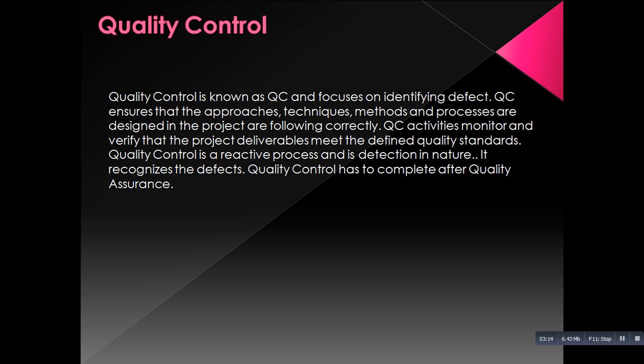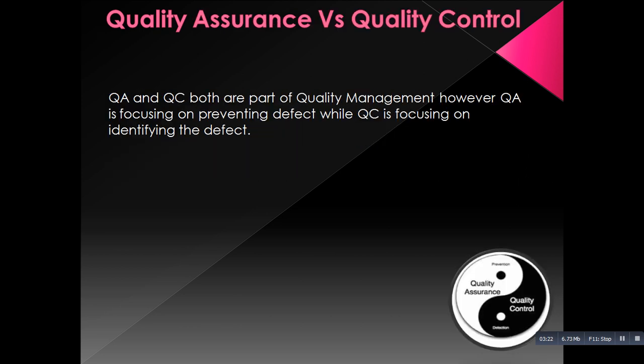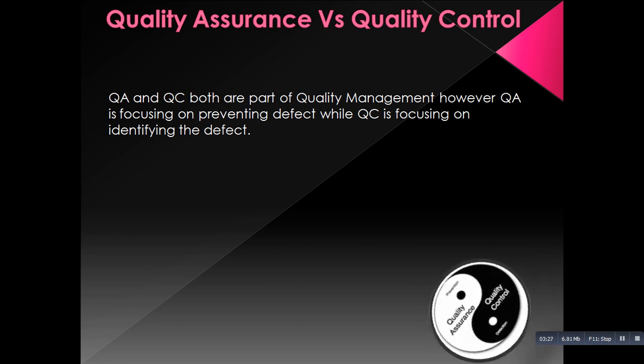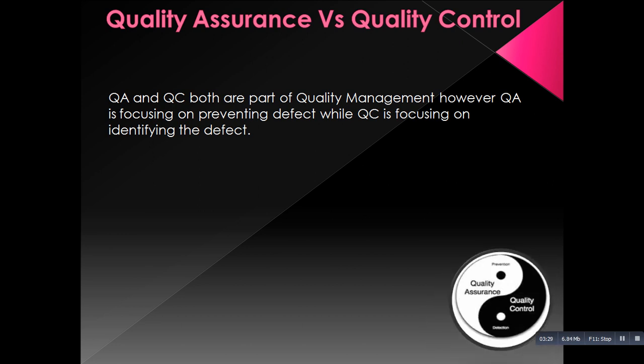Coming to the difference between quality assurance and quality control: both are part of the quality management team. QA focuses on preventing defects whereas QC focuses on identifying defects. Quality assurance is process-based whereas quality control is product-based. Quality assurance contains a process called verification whereas quality control contains a process called validation.